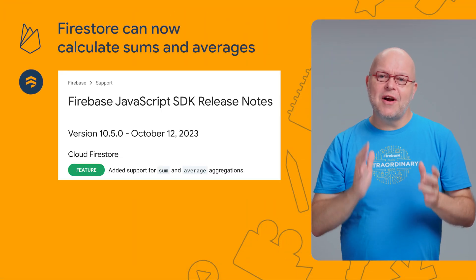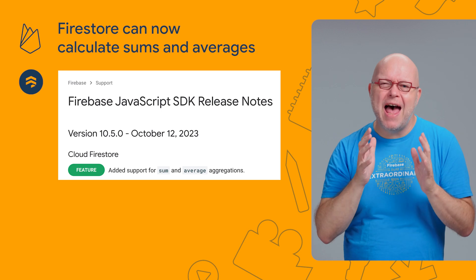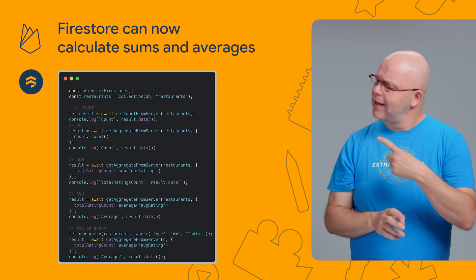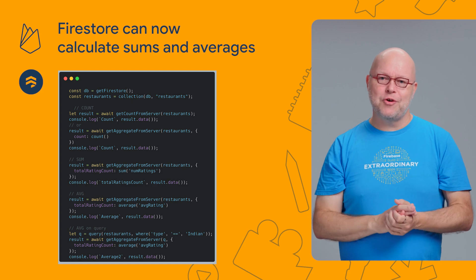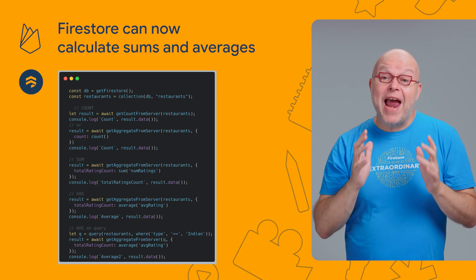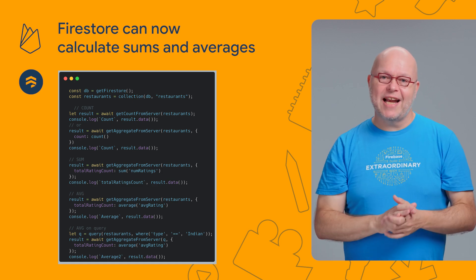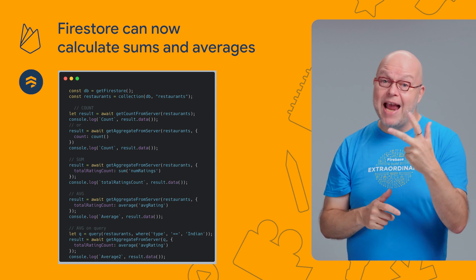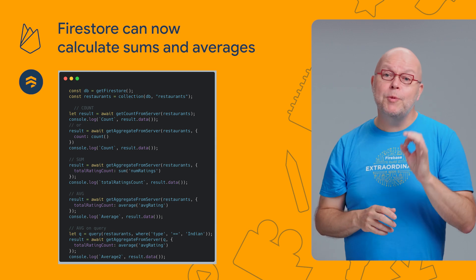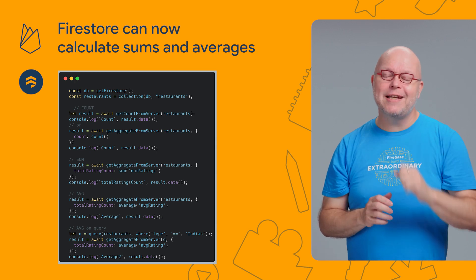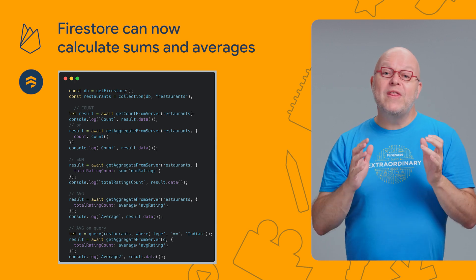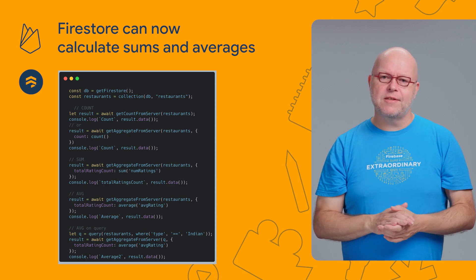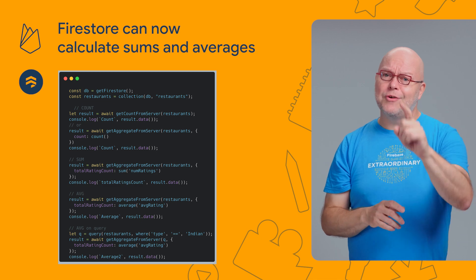First, some updates on Firestore, starting with the availability of the sum and average operators in our SDK for client-side JavaScript developers. Here are some code samples for all of these aggregation operators. These new aggregations work on just the data in your indexes, like the count operator that we launched last year. This means that you can now count, sum, and calculate averages over multiple documents at a fraction of the cost of reading those documents. With the JavaScript SDK out, we expect the other client-side SDKs to follow in the coming weeks, so keep an eye out for those SDK and documentation updates.